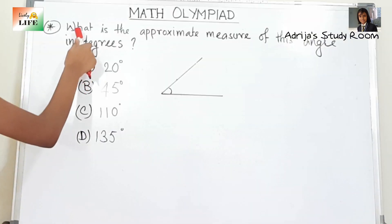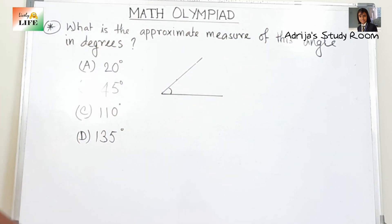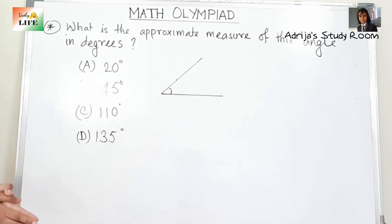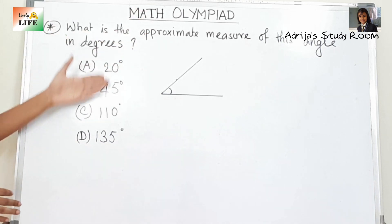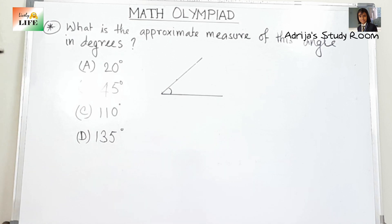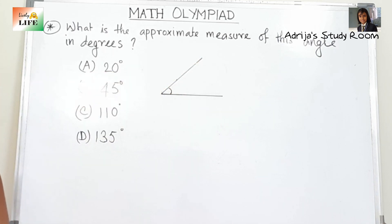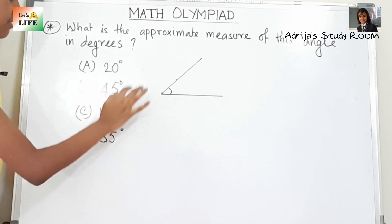The next question is also about angles: what is the approximate measure of this angle in degrees? We have to guess it first, then check with the protractor. You can see it is an acute angle, so 110 degrees and 135 degrees are not possible since those are obtuse. The answer will be either 20 degrees or 45 degrees.